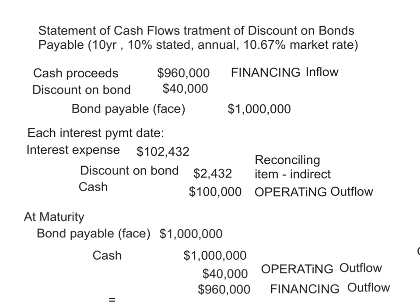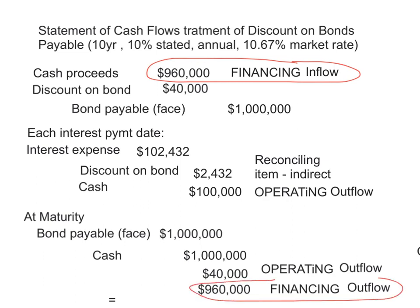At maturity when you repay the bond, the bond comes off at $1,000,000 face amount and the cash out the door is also $1,000,000. But our financing inflow at the top was only $960,000. So when we repay the bond at maturity, we put $960,000 of that $1,000,000 in the financing outflow, and the other $40,000 goes into the operating outflow.